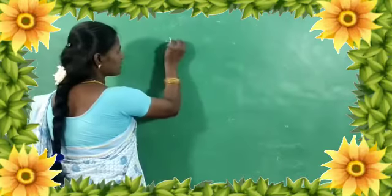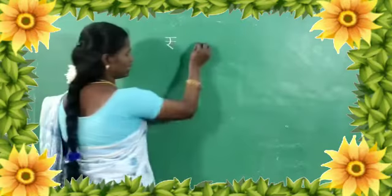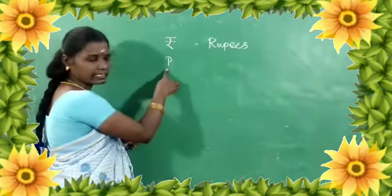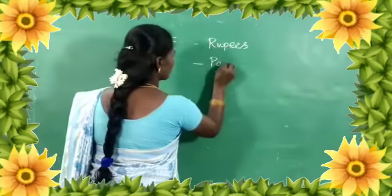We can exchange money by goods and services. Different countries use different kinds of currencies. America uses the dollar. India uses Rupees and Paisa. Rupees are denoted by the Rupee symbol, and Paisa is denoted by Paisa.